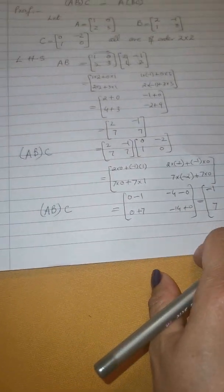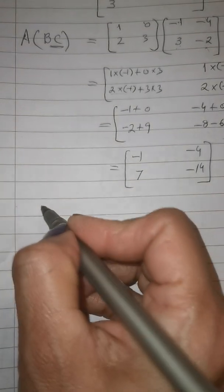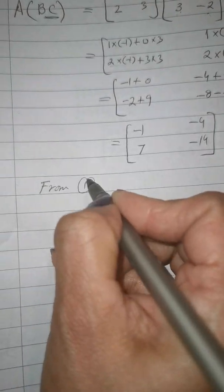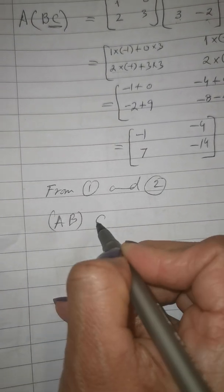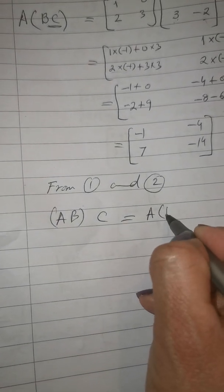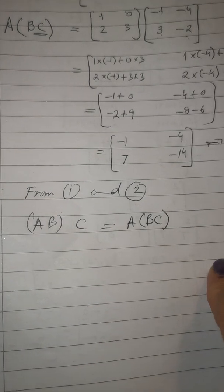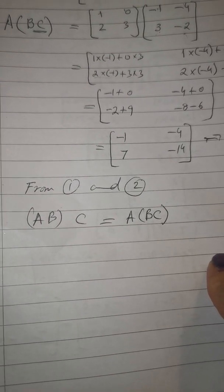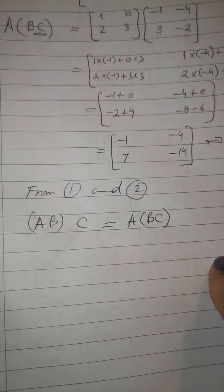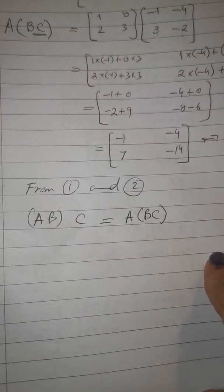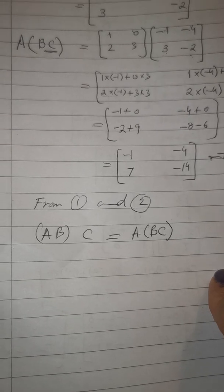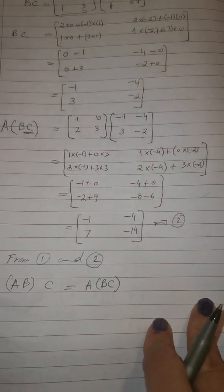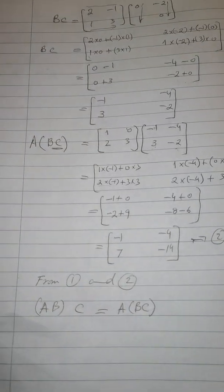From result 1, (AB)C, and from result 2, A(BC) — the values are the same. So we can say (AB)C = A(BC), and in this way we can prove the associative law under multiplication in matrices. It is proved. It's very simple — as long as we know the process of matrix multiplication, we can easily prove it. Hopefully you can understand it.